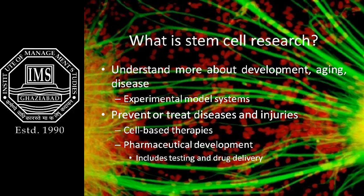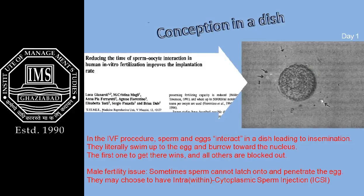Stem cell research may help us prevent or treat diseases and injuries in two ways: cell-based therapies and pharmaceutical development, which includes drug testing and drug delivery. Sometimes a couple is unable to conceive naturally — do you know what type of clinic they might go to? In vitro means 'within the glass,' which is why people produced by in vitro fertilization are sometimes called test tube babies.